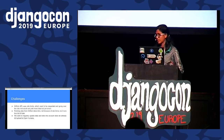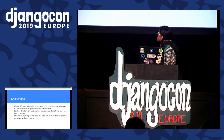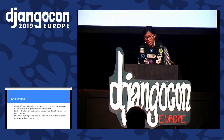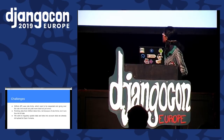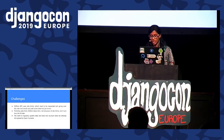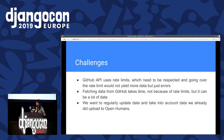Some of the challenges I faced while working with the GitHub API: it uses rate limits, so I had to respect those and make sure fetching a lot of data wouldn't lead to errors. Also, fetching data from GitHub takes time — not because of rate limits, but it can be a lot of data depending on your number of contributions. We also want to regularly update data and account for data already uploaded to OpenHumans, since you keep adding to your contributions.